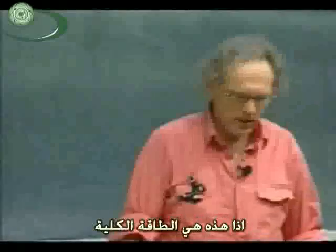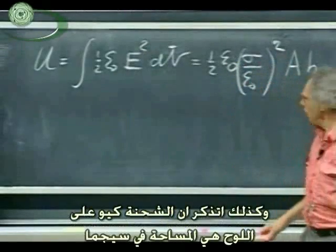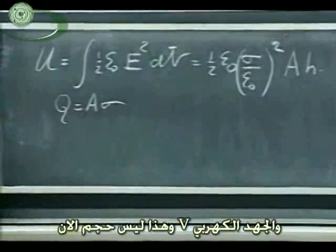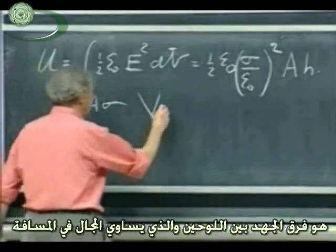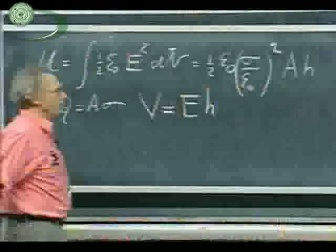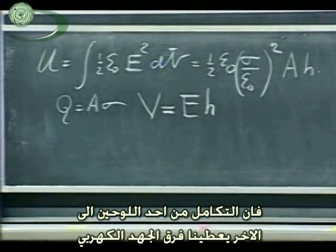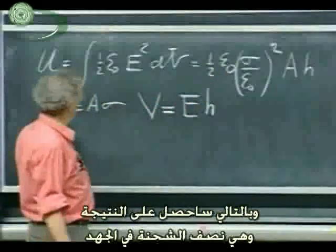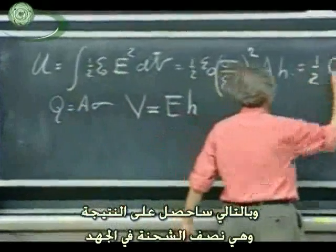This is the total energy that I have in this square. I lose one epsilon here — I have an epsilon zero squared and I have an epsilon. I also remember that the charge Q on the plate is A times sigma, and that the potential difference V — this now is not volume, it's the potential difference between the plates — is the electric field times H. The electric field is constant; they go from one plate to the other. The integral E dot dL going from one plate to the other gives me the potential difference. And so I can substitute that now in here. I can take A sigma and put in Q, and you can also show that this is one half QV.